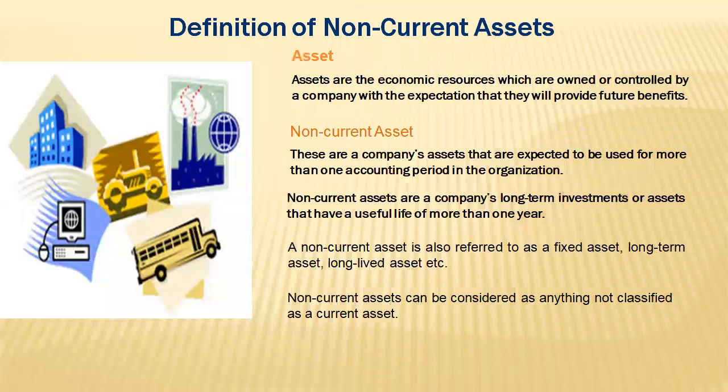Before we look at the definition of non-current assets, let's first look at what an asset is. We are familiar with assets — when we hear the word, we refer to buildings, cars, electronics, computers — things that we can see and that are tangible most of the time. Assets are the economic resources which an organization owns or controls and which are expected to derive some future benefits.